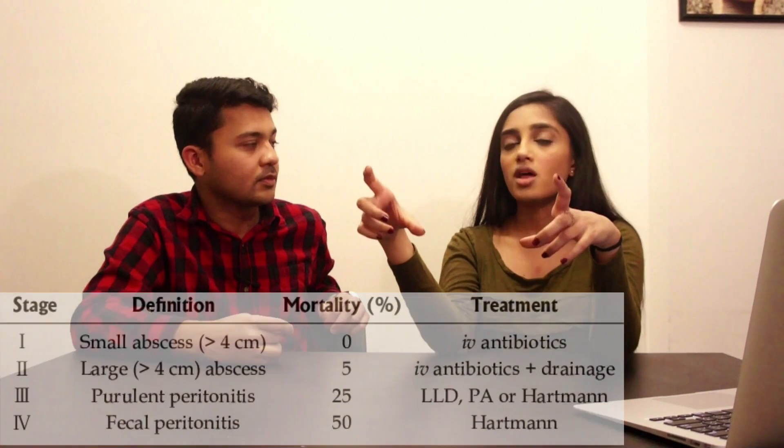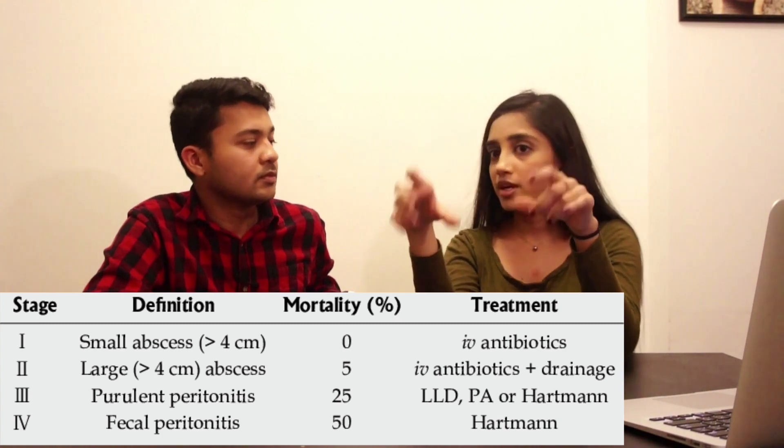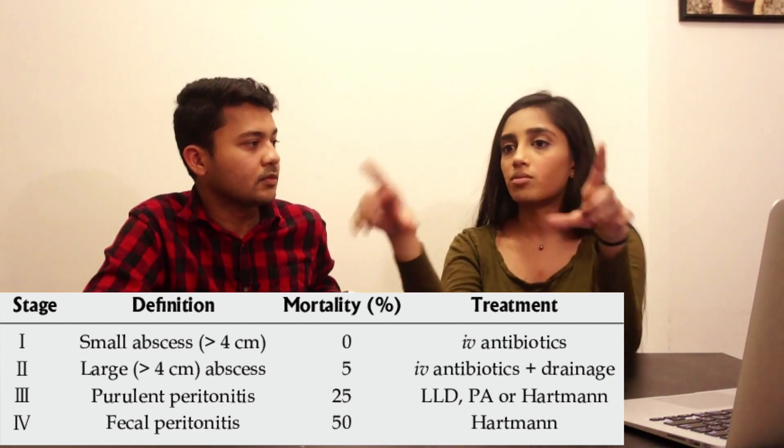Treatment is where people start to butt heads — antibiotics or surgery. There's the Hinchey classification, which stages diverticulitis in four stages and helps guide conservative versus surgical management. The more common umbrella rule is: if you have more than three episodes of diverticulitis, you're indicated for a sigmoid resection. You come in electively once the episode is fully resolved, get your sigmoid resected with primary anastomosis, and greatly reduce your chances of recurrence.